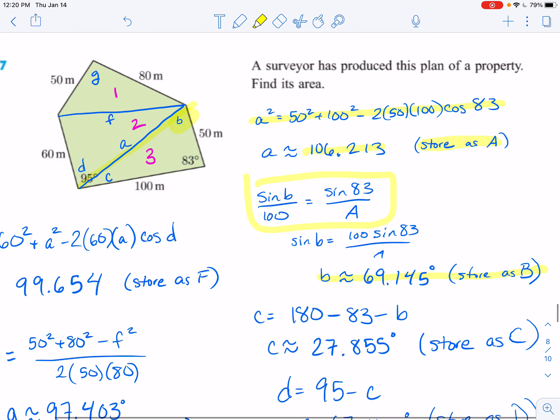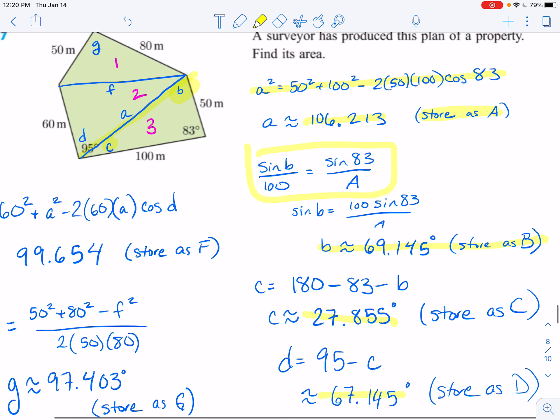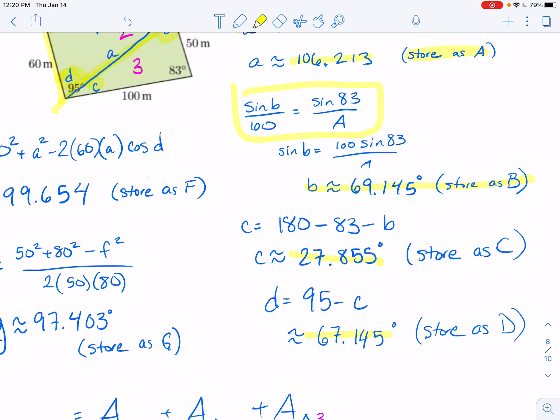And then I knew that angle C down here would be 180 minus the two other angles that I knew. I stored that as C. And then I knew that this whole thing, I thought if I could find angle D, then I'd have a 60 on this side, I'd find angle D, and then I'd have this, I'd know that one, and then I could then work and find F next. And so that's what I did. I knew that this whole thing, C plus D was going to equal 95, so I could find D.